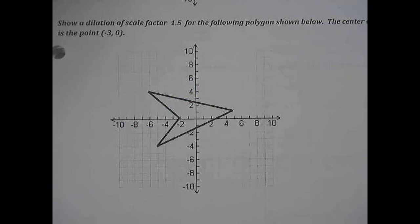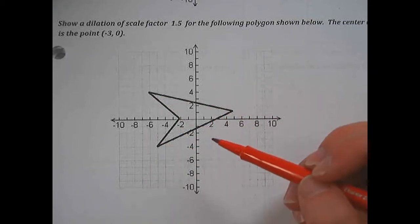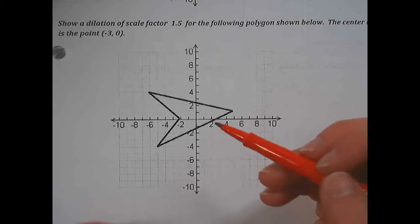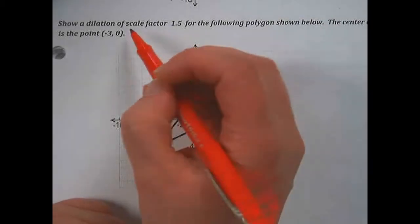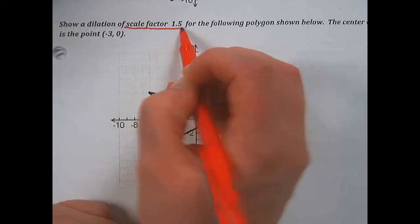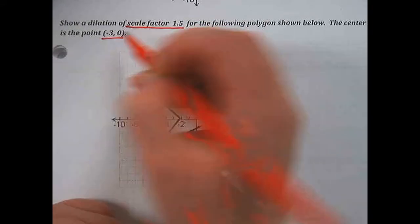This is an example of how to do a dilation on a graph given a polygon. First, we need to locate two things: the scale factor, which is 1.5 in this case, and the center of dilation, which is the point (-3, 0).